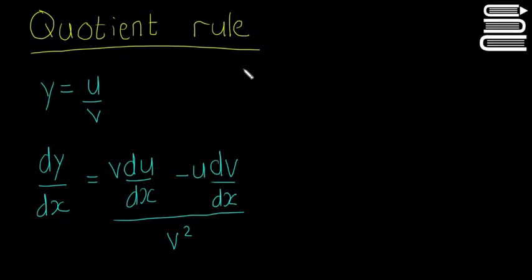Remember, when we want to differentiate something and two things are multiplying, we use the product rule. Now, if we're going to differentiate something where two things are dividing instead, like this, then we use the quotient rule. So dividing for quotient rule and multiplying for product rule, when we're trying to differentiate something.